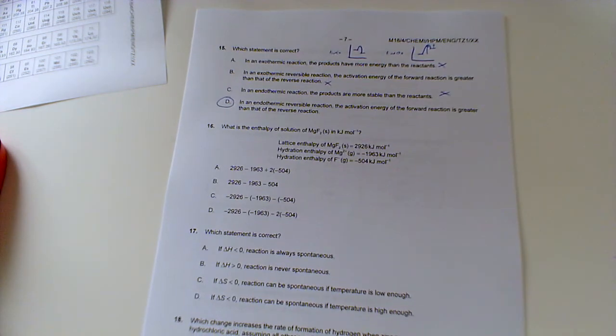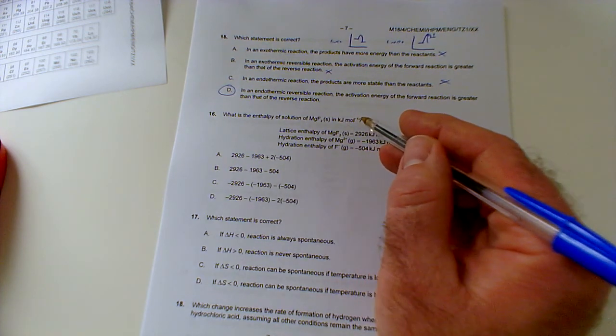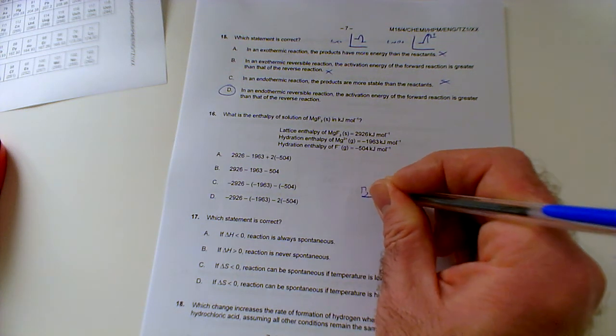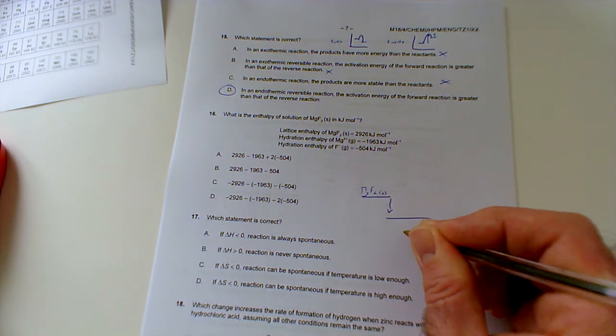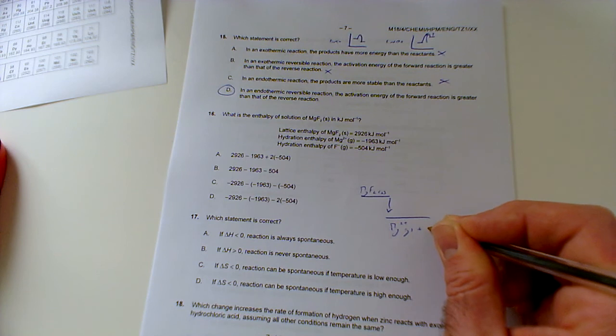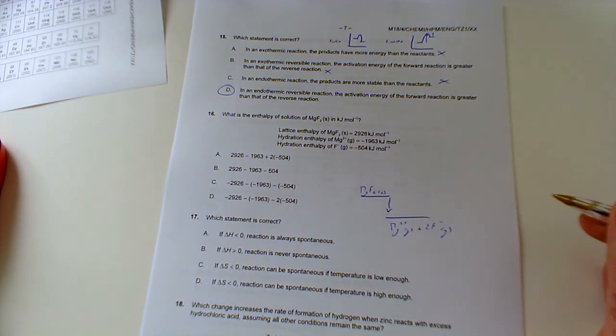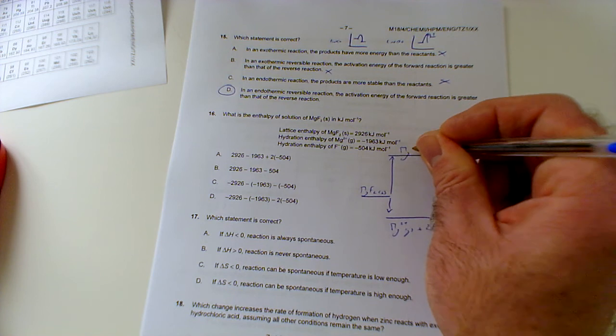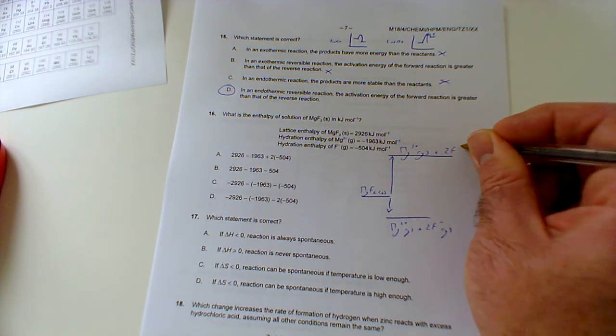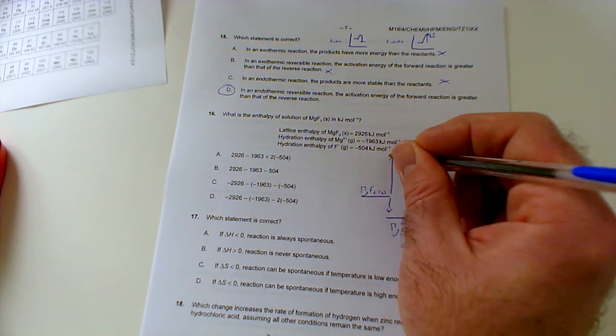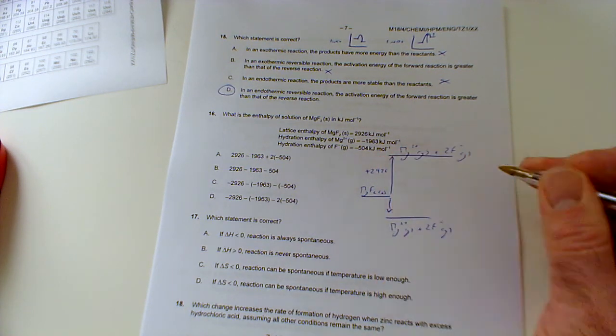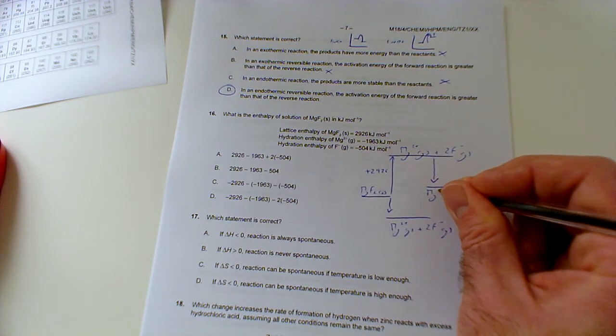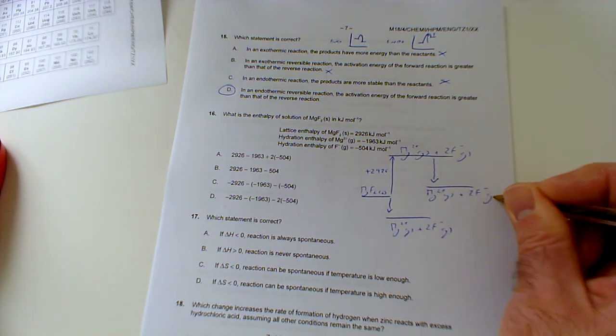Number 16: what is the entropy of solution of magnesium fluoride in kilojoules per mole? We've got the lattice entropy, the hydration entropy of magnesium and hydration entropy of fluoride. Basically, if we're starting here which is our magnesium fluoride solid, and then we're going to be converting that to magnesium two plus aqueous plus two fluoride ions aqueous. That's what I'm trying to find, the entropy of solution. The lattice entropy going up there would be to convert these to gaseous ions. So that'd be Mg2+ gas plus 2F- gas. That's an endothermic process because we're breaking these ionic bonds, so that's our plus 2926.